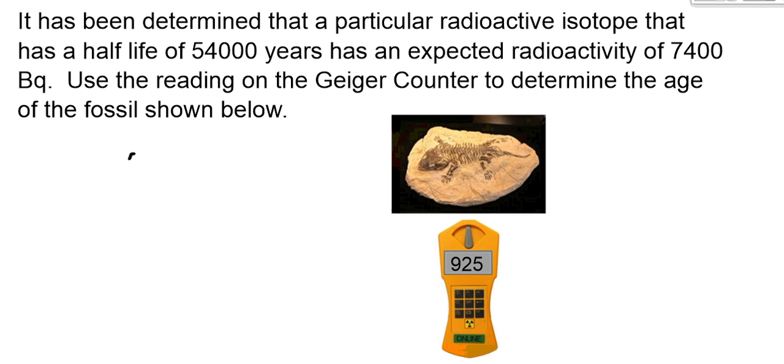To do that, you take the expected radioactive rate of 7,400 and we will divide that by 925. And we'll see what that result is. So 7,400 divided by 925 gives me an answer of 8. So what this means is, this radioactive rate of 925 Becquerels is 8 times less than what's expected. So we want to figure out how many half-lives have gone by. To do that, you're going to use a simple expression, 2 to the x is equal to 8.